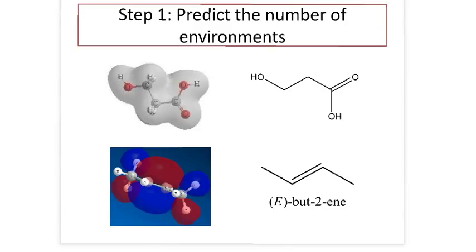So the first step in predicting what an NMR spectra for a given molecule is going to look like is to predict how many different environments you have for those carbons. In these molecules here, if you look at this first one, you can see there's one, two, three different carbon environments. So in the NMR spectra, you would expect to see three different peaks.